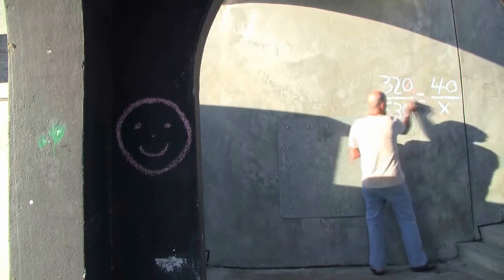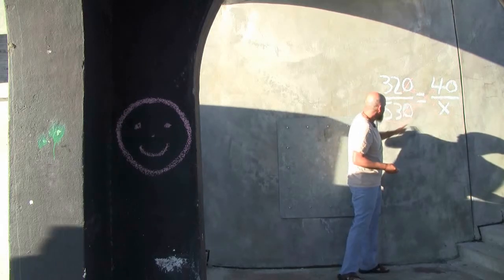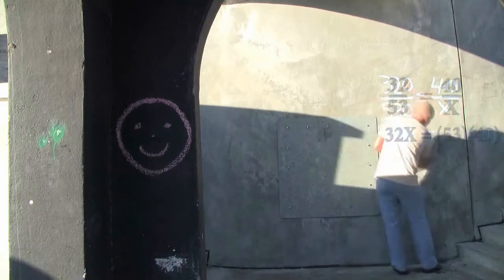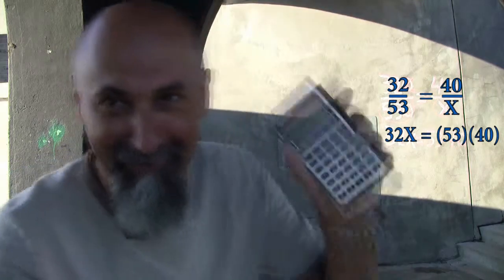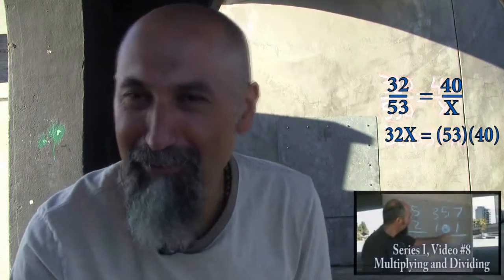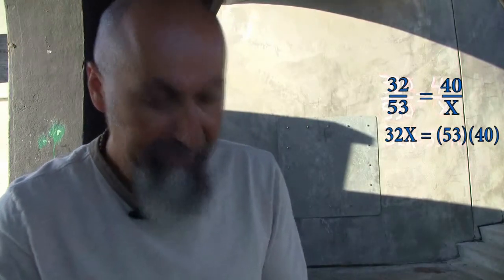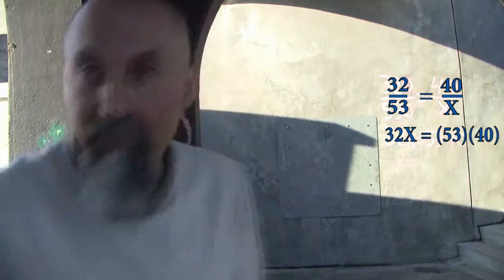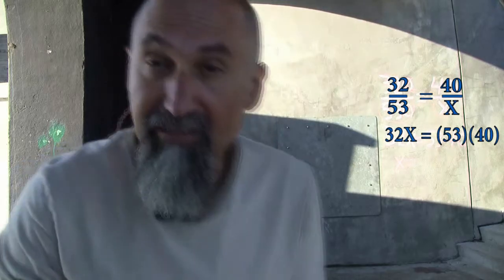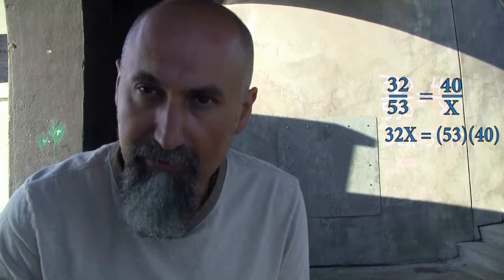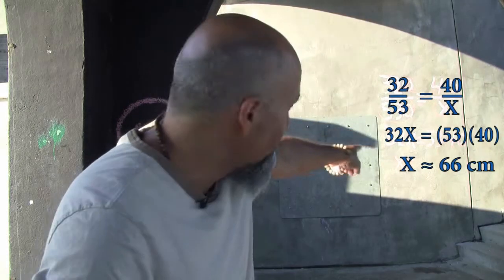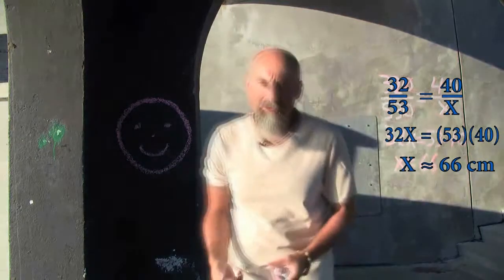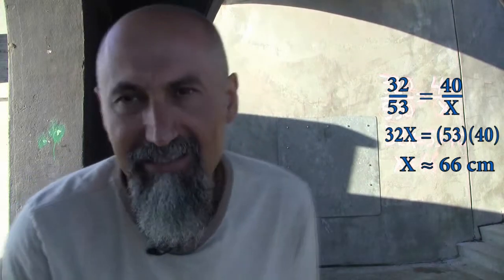We're going to grab X, kick it up, and grab 530 and kick it up there. So: 32X equals 53 times 40. Simplify before solving — smaller numbers are easier to deal with. I brought a little calculator because I'm limited on space, but you should know how to multiply, divide, add, and subtract — that's covered in series one. So 53 times 40 gives us 2,120. Then 2,120 divided by 32 gives us 66.25. That's the diameter of the circle we need for the back wall. We round it down to 66 centimeters.